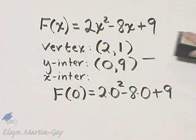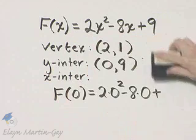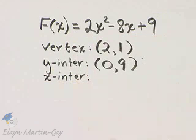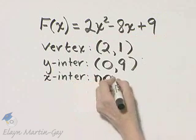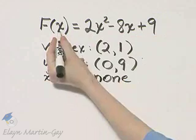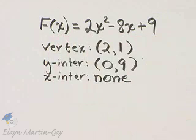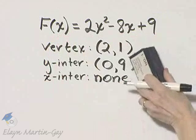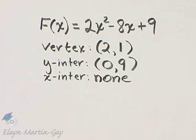So under x-intercepts, I'll write none. By the way, what happens, you may ask, if you let y be 0 and you solve this, you would have some type of complex number solutions, certainly not on our number line.